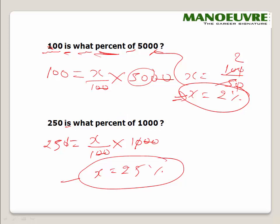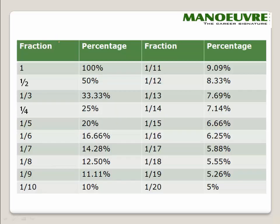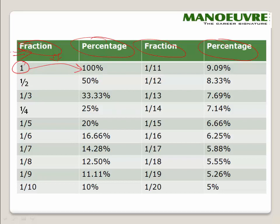Before we move on, I want you to take a piece of paper and jot down the fraction-to-percentage conversion table. For example: 1 = 100%, 1/2 = 50%, 1/3 = 33.33%, 1/4 = 25%, and so on up to 1/20. You have to memorize all these values — there is no option if you want to crack any competitive exam.